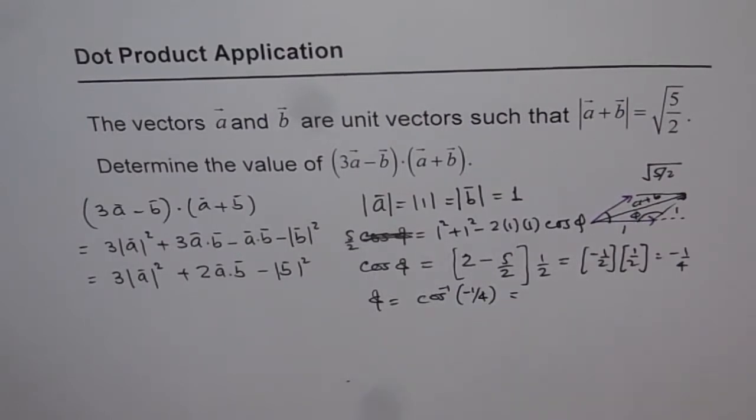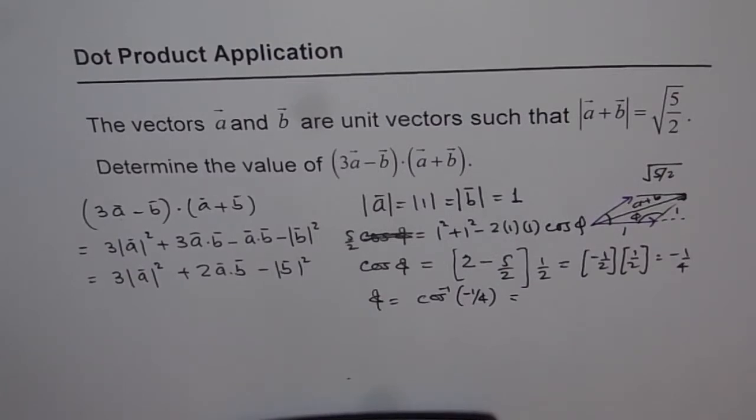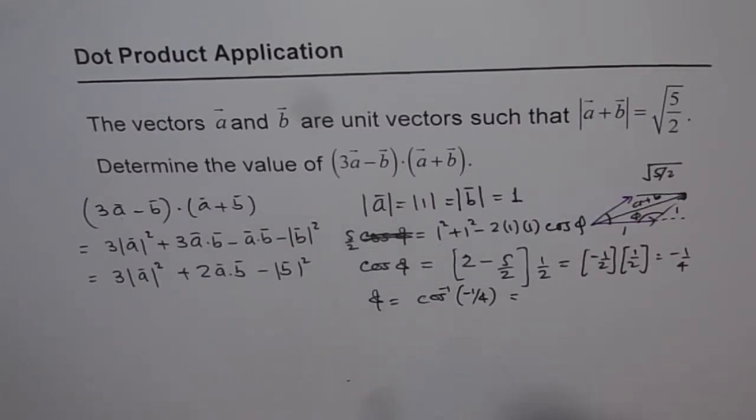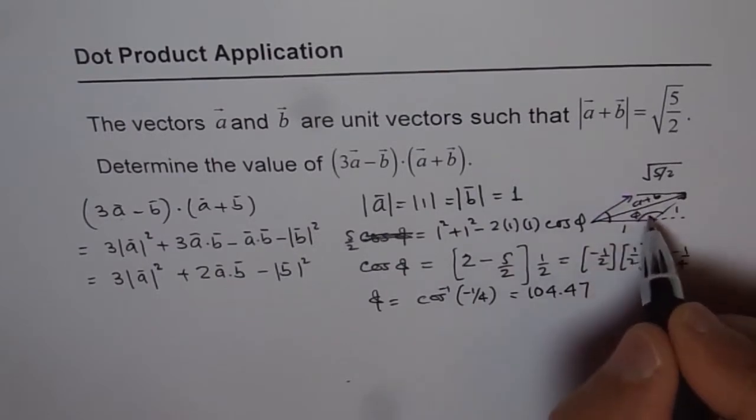Let us find it using the calculator. So we have got second function, cos inverse within bracket minus 1 divided by 4 bracket close equals to 104.47.